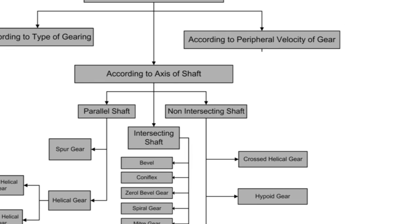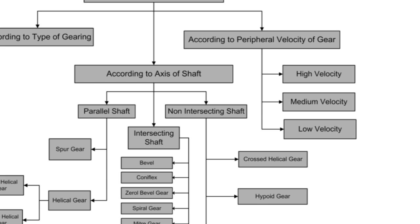Now, according to peripheral velocity of the gear, gears are classified into three groups: low velocity gears, medium velocity gears, and high velocity gears.